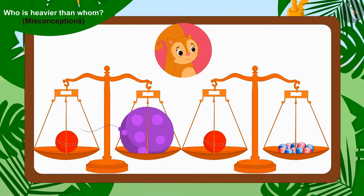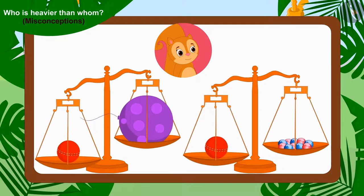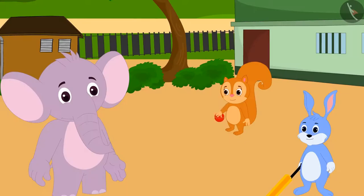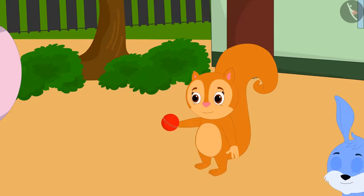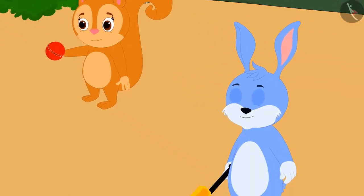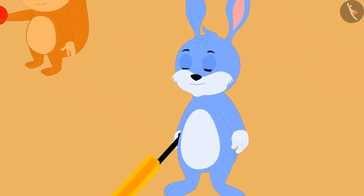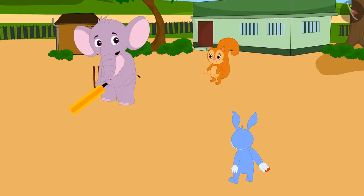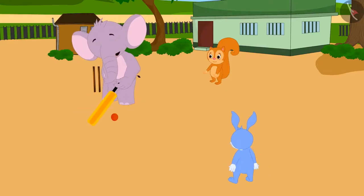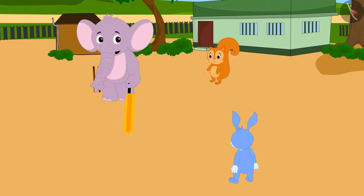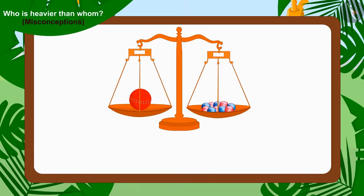Bunny and Appu agreed that the weight of Chanda's one cricket ball is more than Appu's balloon and Bunny's ten marbles. Finally, the three found out which game they had to play. They took Chanda's cricket ball and Bunny also brought a cricket bat from his house. All three friends played the game of cricket with great pleasure.